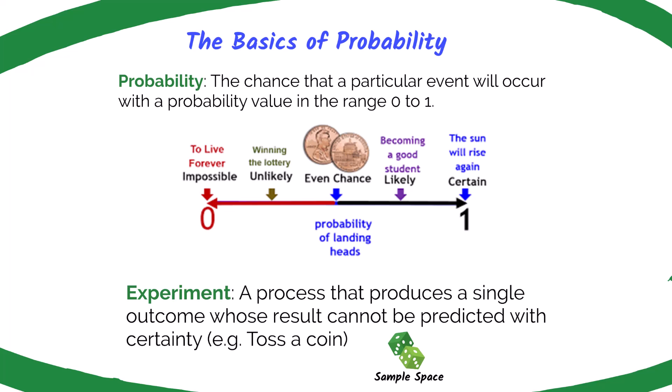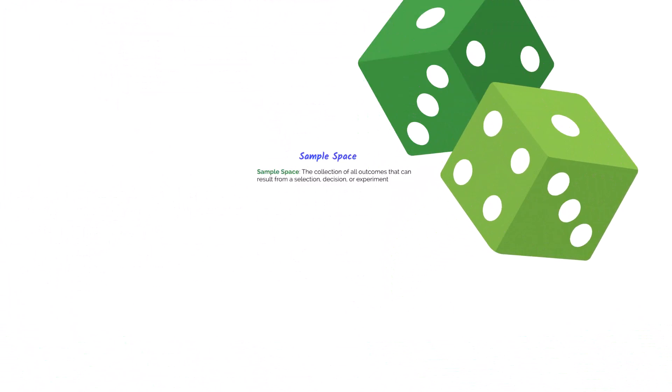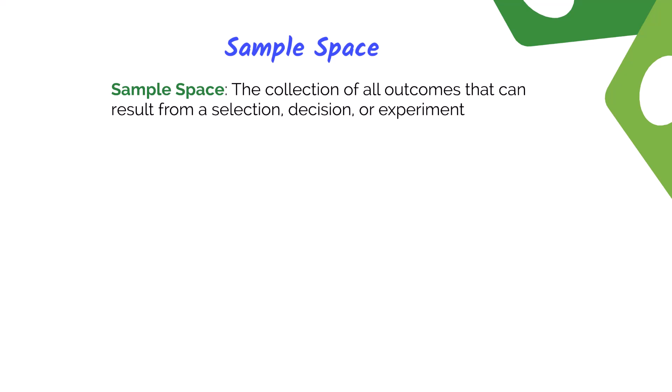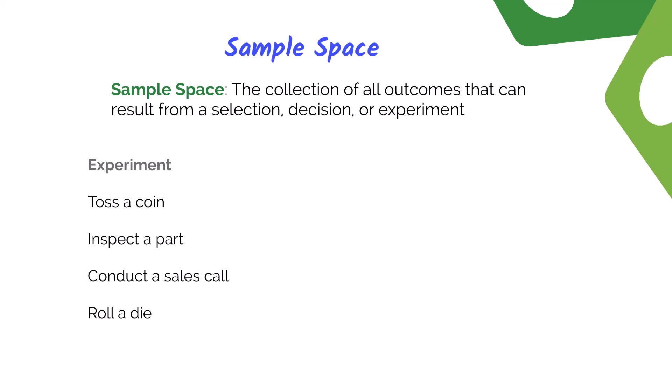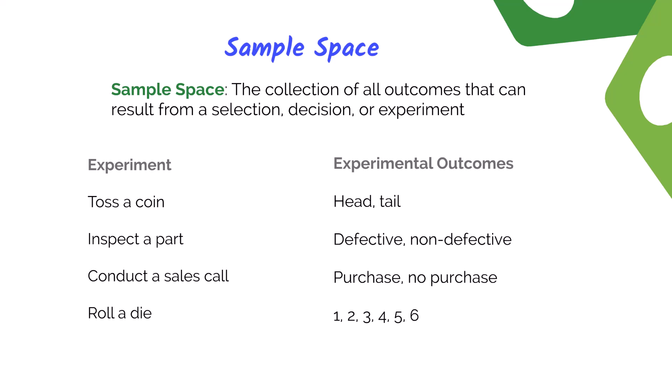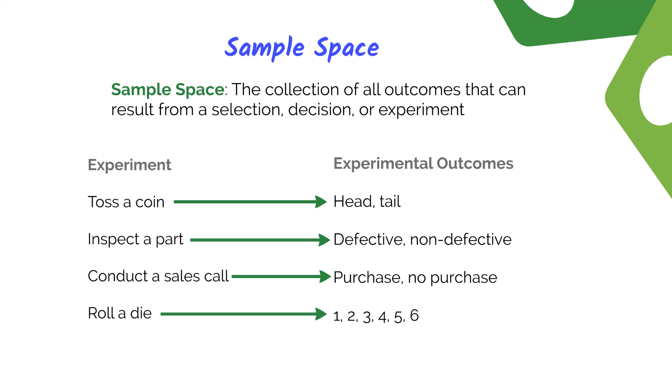We're going to talk about the sample space and the different types of events. A sample space is a collection of all the possible outcomes that can result from a selection, decision, or experiment. Examples of experiments include tossing a coin, inspecting a part, conducting a sales call, or rolling a six-sided die. The sample space for these experiments: tossing a coin results in heads or tails; inspecting a part results in defective or non-defective; a sales call results in purchase or no purchase; and rolling a six-sided die results in 1, 2, 3, 4, 5, or 6.